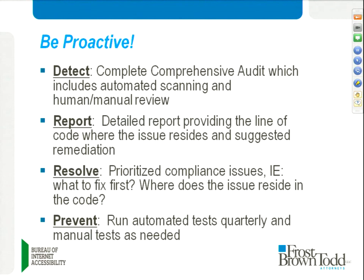Prevent: based on DOJ settlements, what's consistently advised across the board is the same — quarterly automated tests and manual tests as needed. Quarterly automated testing helps you follow progress, understand where you're going, and detect trends. For example, if you suddenly see a lot of images missing alt tags again, you can investigate — did someone new start a job there who is not familiar with accessibility requirements? Quarterly testing gives you the ability to monitor everything happening on your website on an ongoing basis.